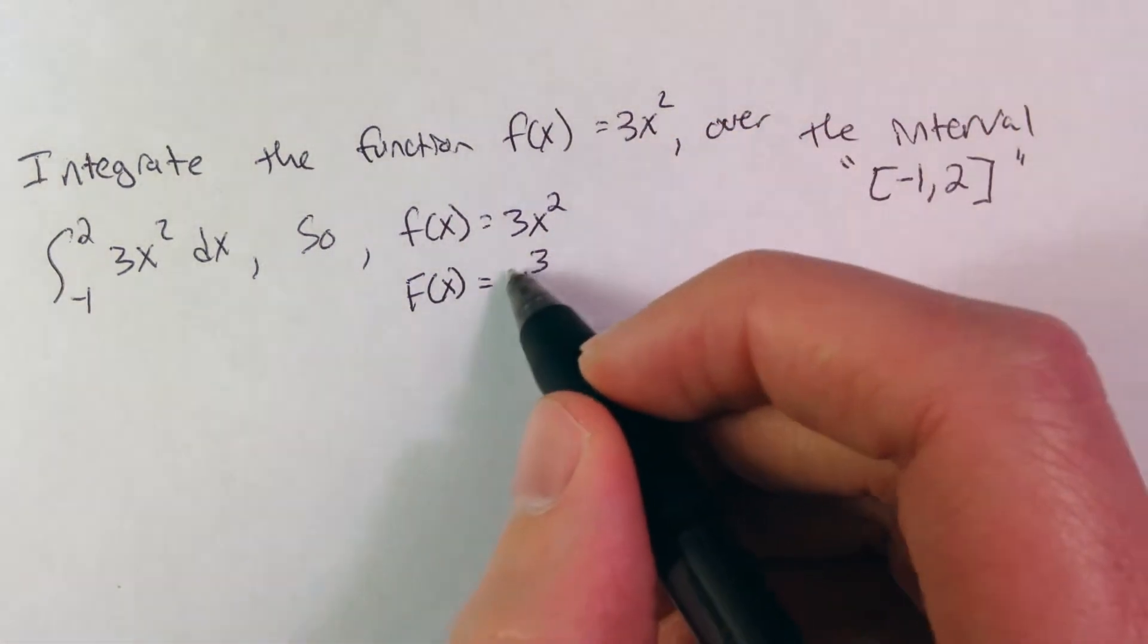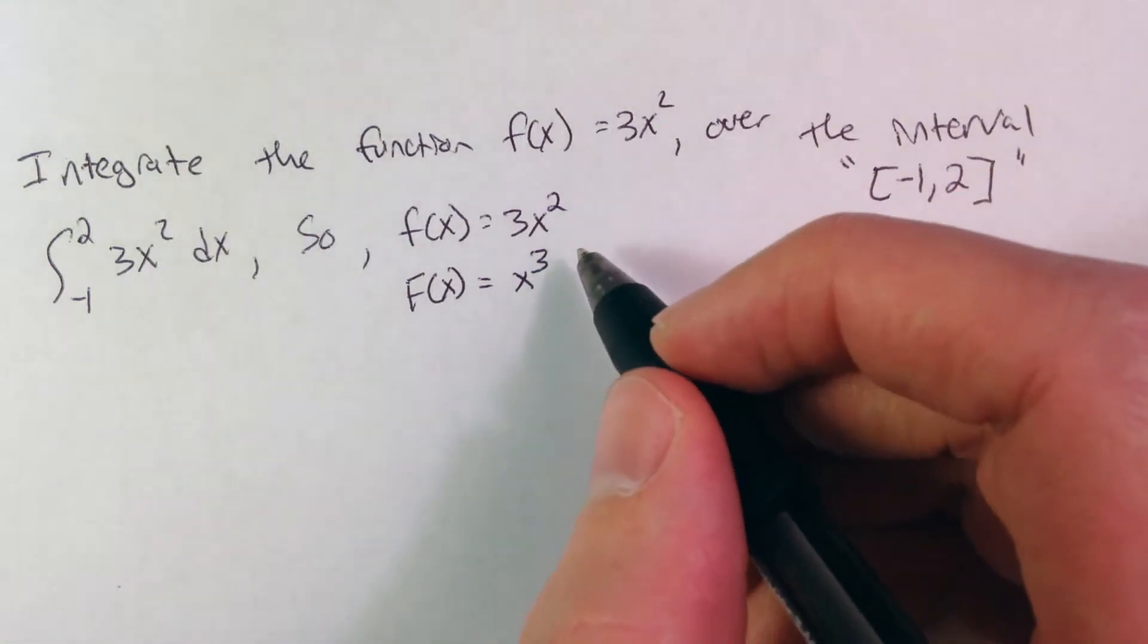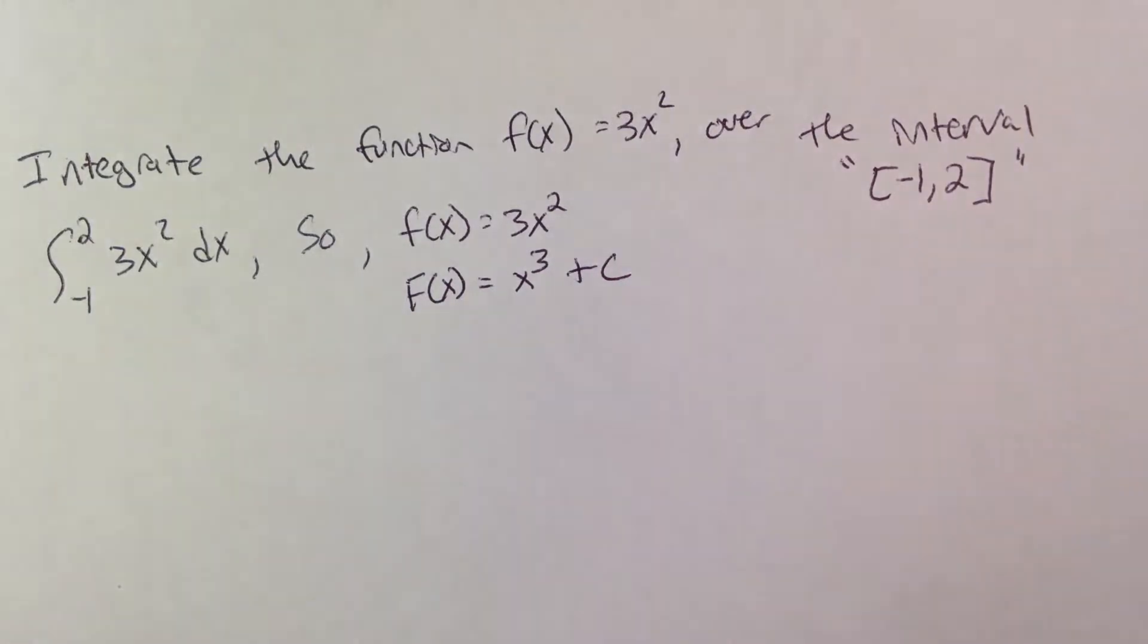Because if we do the power rule, 3 comes down up front here and gives us that minus 1 from the exponent to the 2, plus my c value.